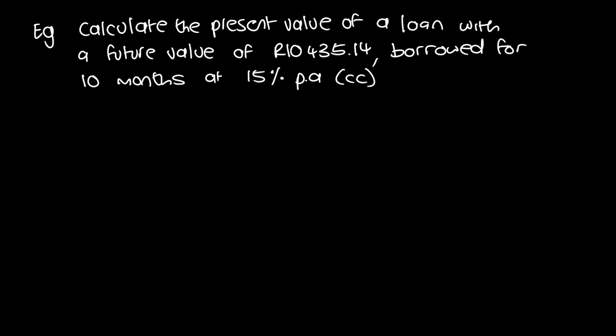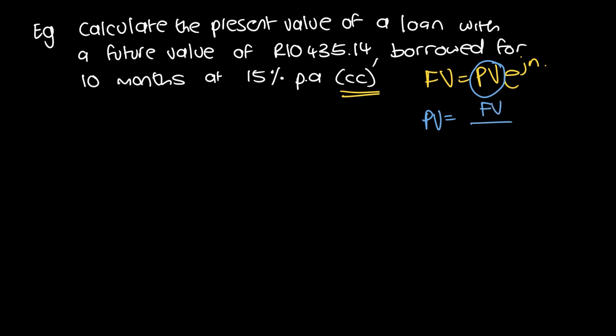Next example: calculate the present value of a loan with a future value of $10,435.14, borrowed for 10 months at 15% per annum continuously compounded. Seeing CC, we know our formula is FV equals PV·e^(jn). Since we want PV, we rearrange to get PV equals FV divided by e^(jn).